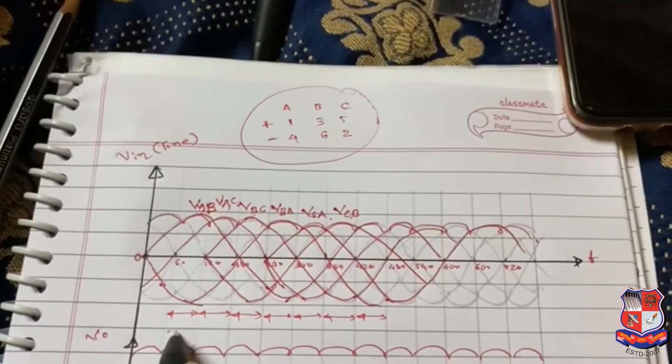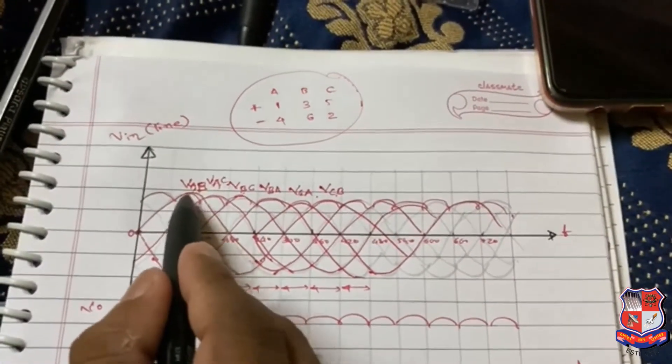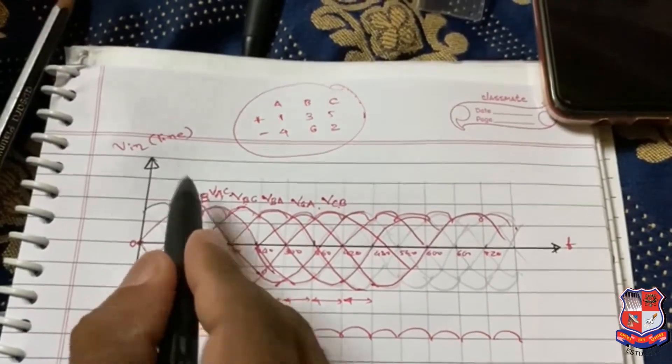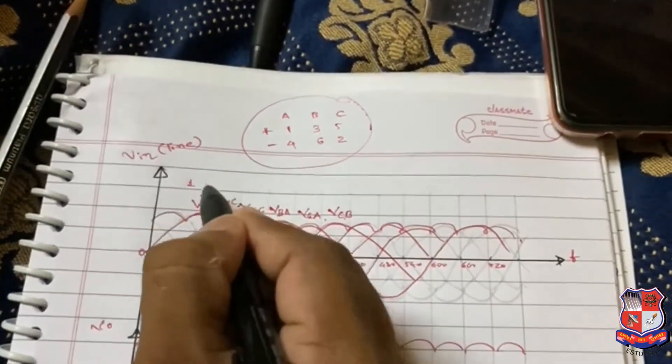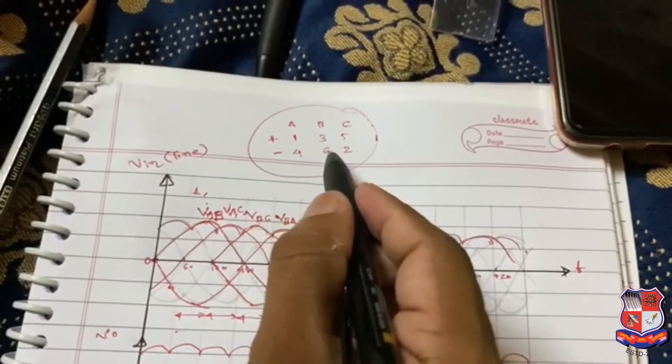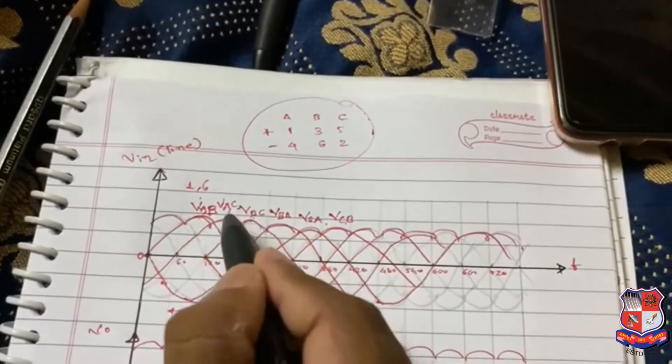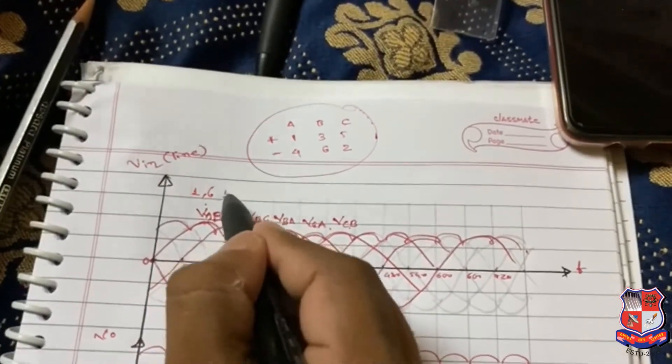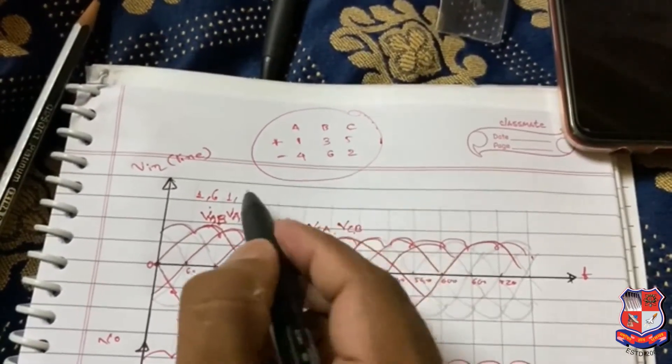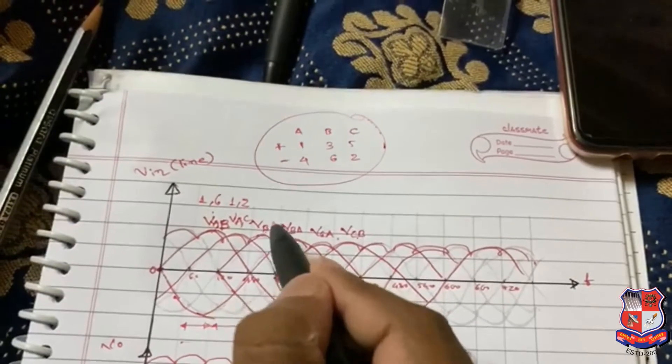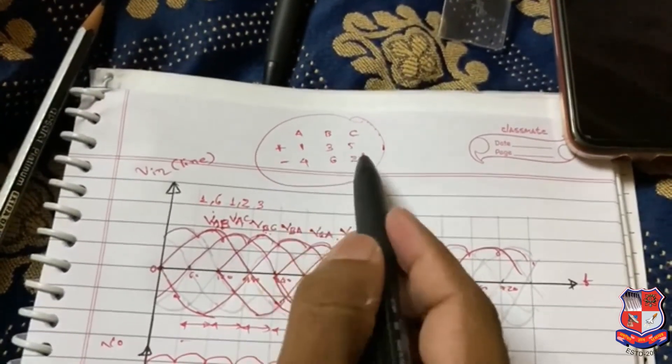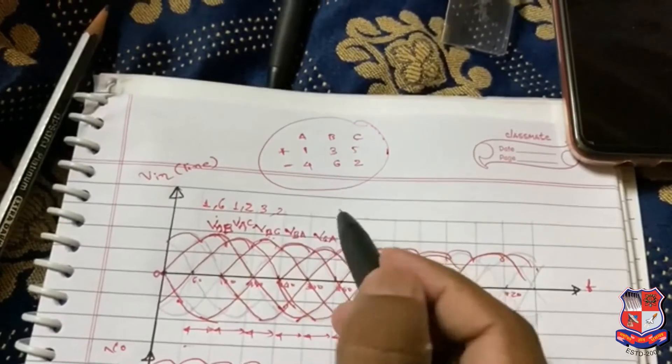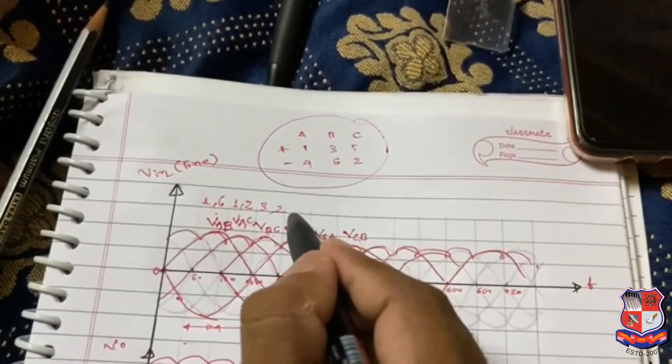Now VAB means A positive switch and B negative switch, so 1, 6. VAC means one positive switch, C negative means 2. Now B positive means 3, C negative means 2, so 3, 2.